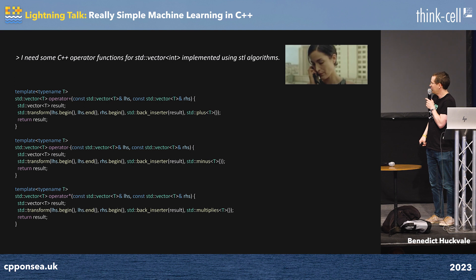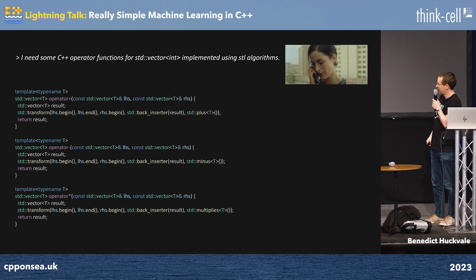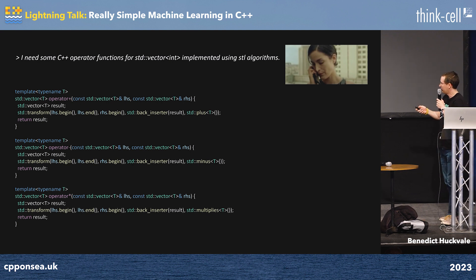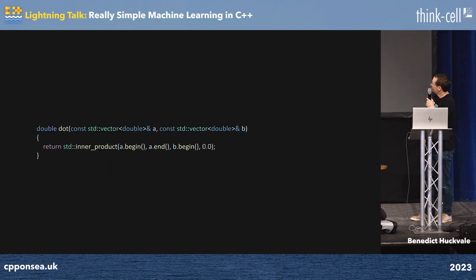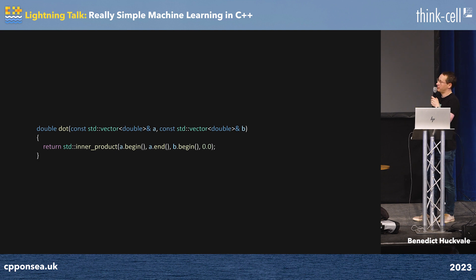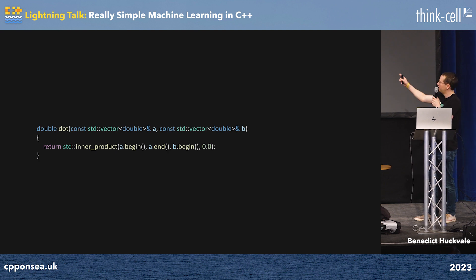Unfortunately I did have to tell it to use std::transform, because as has been mentioned before, the large language model gets a lot of rather rubbish code in its input and doesn't think of these sorts of things — so you do have to tell it. For dot products we've got inner_product, so we can just use that.